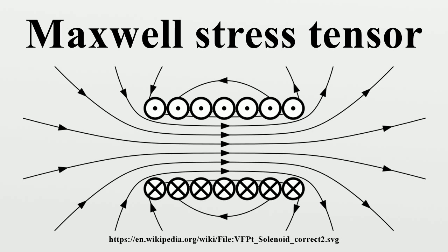In the relativistic formulation of electromagnetism, the Maxwell stress tensor appears as a part of the electromagnetic stress-energy tensor, which is the electromagnetic component of the total stress-energy tensor. The latter describes the density and flux of energy and momentum in spacetime.